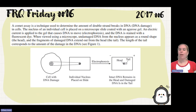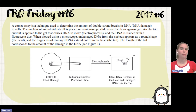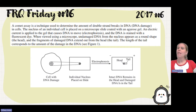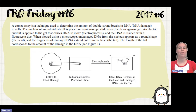They give us a little bit of background about a comet assay. They tell us it's a technique used to determine the amount of double-strand breaks in DNA. The nucleus of the cell is placed on a microscope slide, coated with an agarose gel. Electric current is applied to the gel that causes DNA to move. The DNA is stained with a dye that, when viewed under the microscope, shows undamaged DNA — fully intact — appearing as a round shape, which would be the head. Fragments of DNA extend from that as the tail, and the length of the tail corresponds to the amount of damage in the DNA.